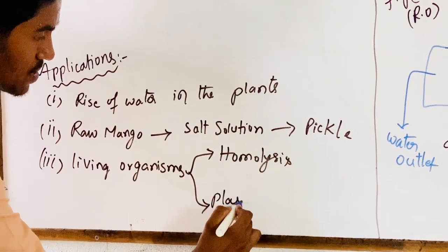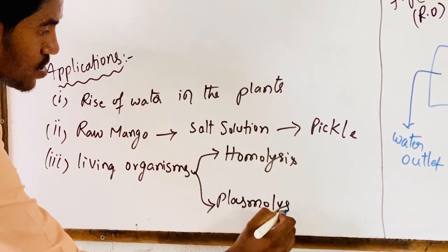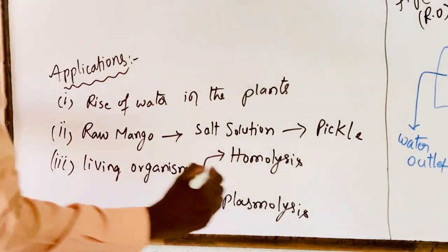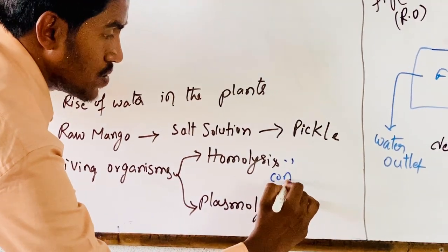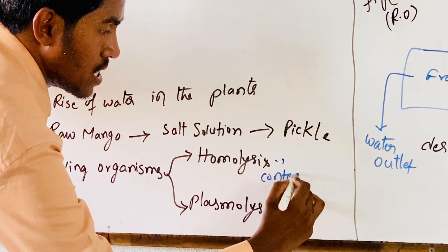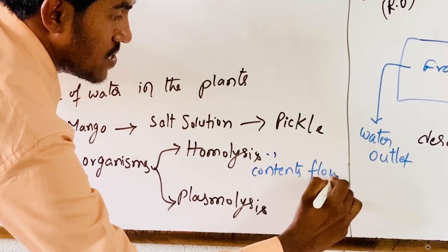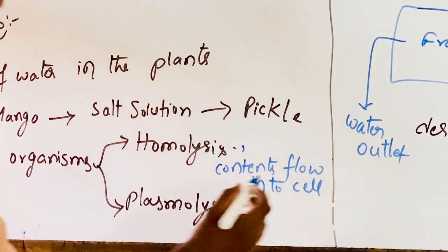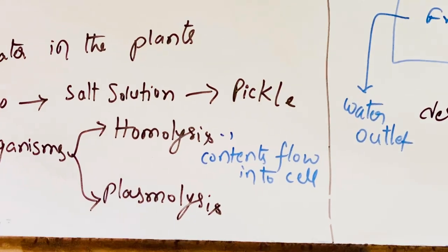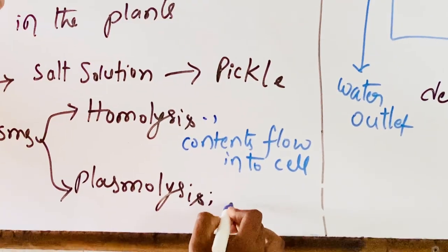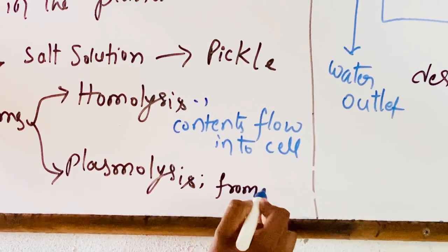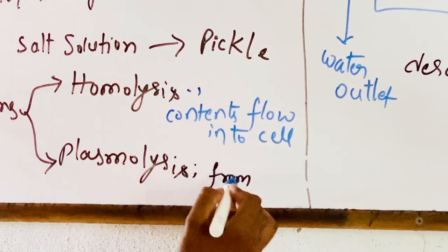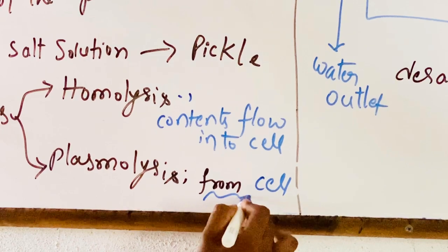However, osmosis does not occur the same way in living organisms. In living organisms, it is followed by two methods: homolysis and plasmolysis. In homolysis, contents flow into the cell. In plasmolysis, contents flow out from the cell.